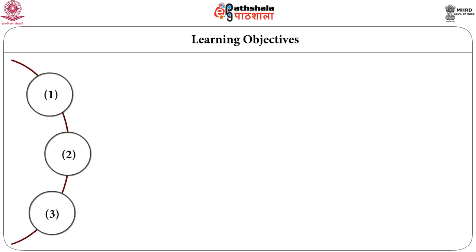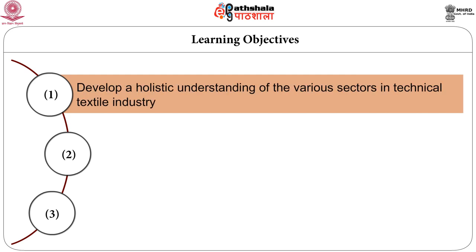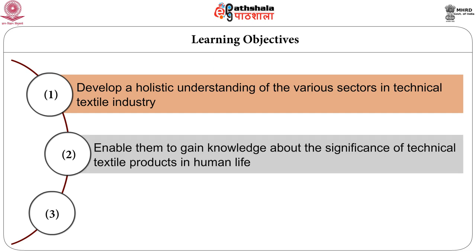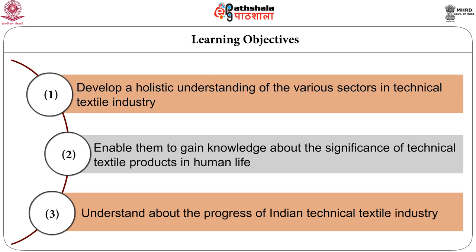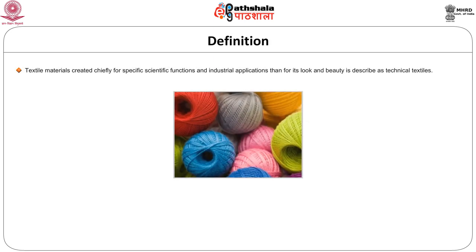Let us see the objectives of this session. The main objective is to understand what and how the technical textile industry has developed. You will also know how technical textiles has been a part of mankind. You will understand the progress and development with reference to Indian technical textiles. Now, let us look into the definition of technical textiles. Any textile material created chiefly for specific scientific functions and industrial applications rather than for its look and beauty is described as technical textiles.